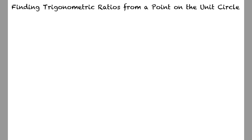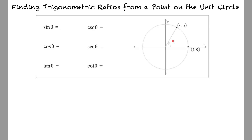To start, let's review the trigonometric identities. This way, when we are given coordinates, we can identify the sine, cosine, tangent, cotangent, secant, and cosecant values from the coordinate point. Sine equals y, cosine equals x, and tangent equals y over x.